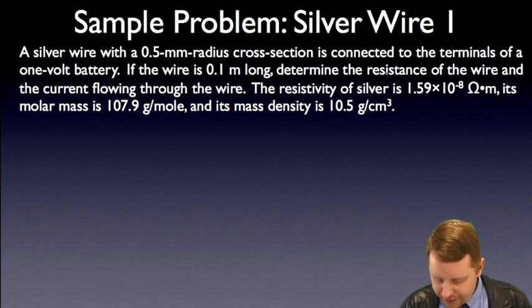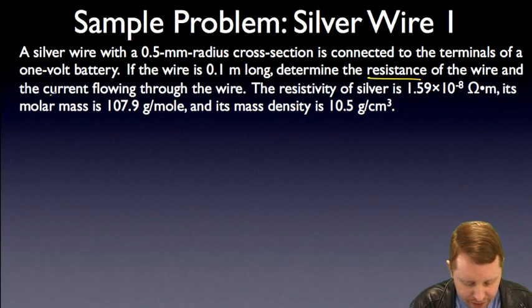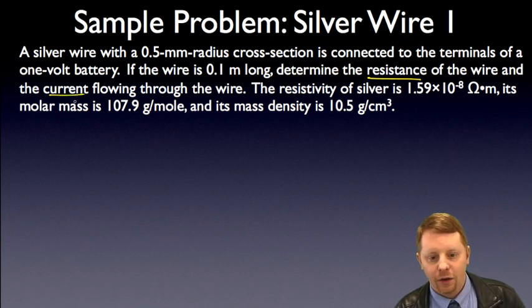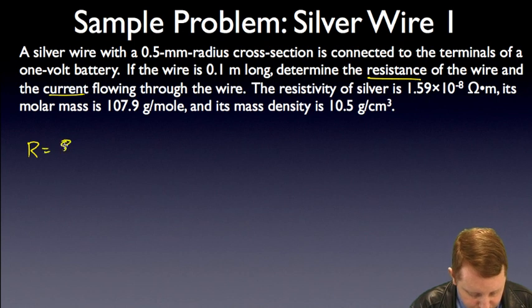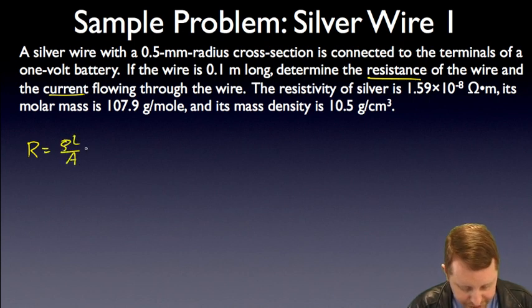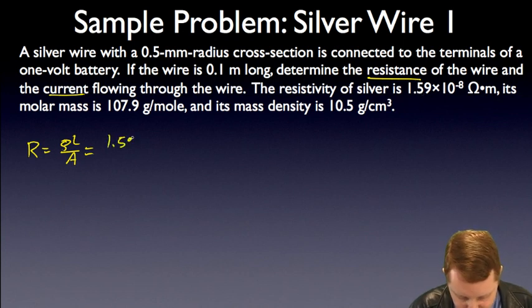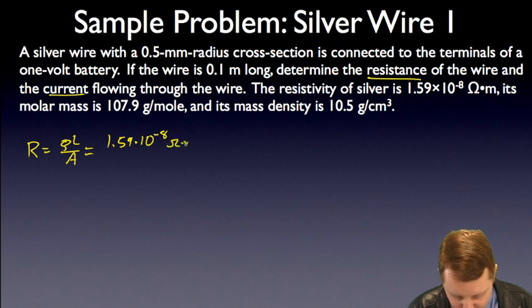So, let's start off by finding the resistance of the wire and the current. Well, to find resistance, R equals Rho L divided by A. In this case, Rho, since it's silver, our resistivity is 1.59 times 10 to the minus 8 ohm meters.